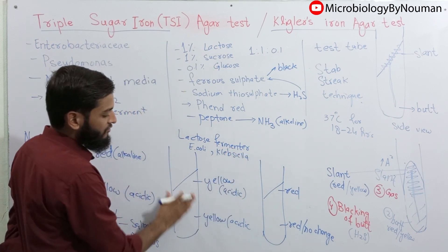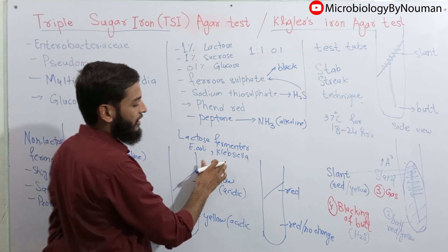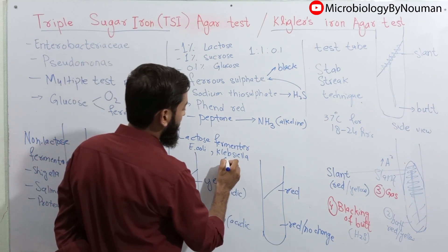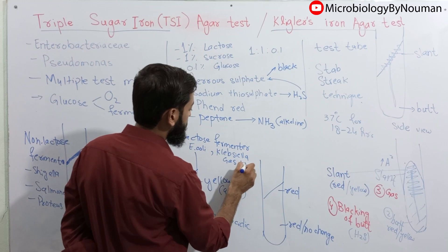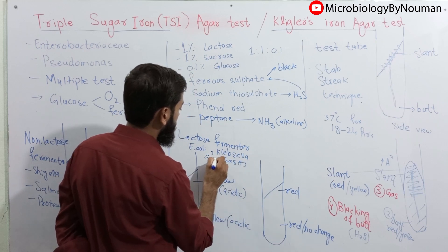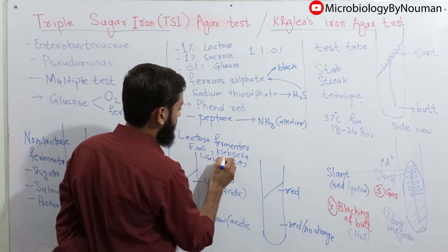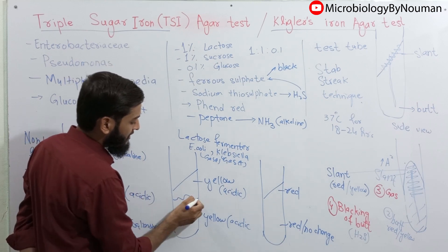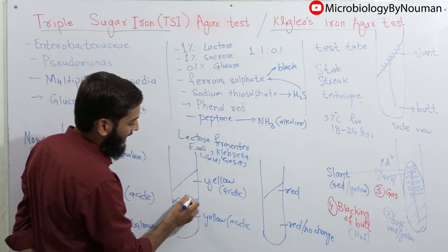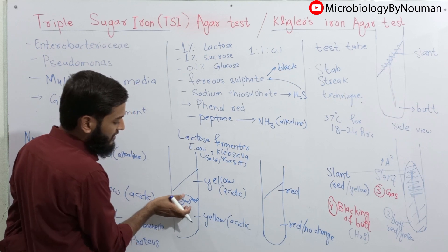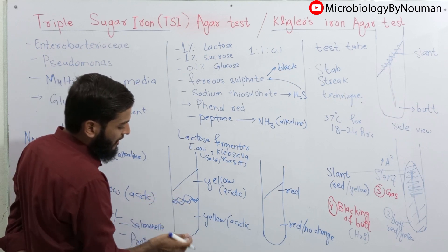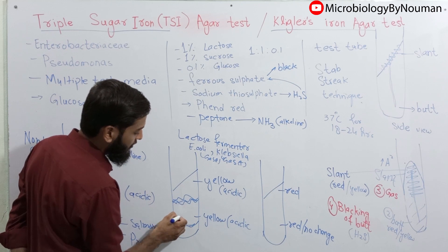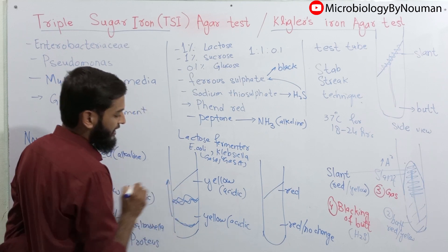Other than yellow slant and yellow butt, E. coli and Klebsiella also produce gas, so they are gas positive. The gas is seen sometimes in the form of cracks in the media, breaking it into 2-3 pieces, or sometimes the gas is trapped in the lower portion and the whole media is pushed in the upward direction.